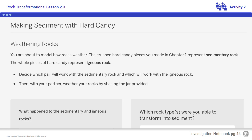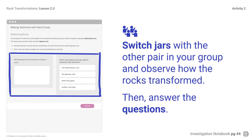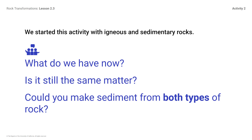After 1–2 minutes, stop shaking the rocks. Switch jars with the other pair in your group and observe how the rocks transformed. Then answer the questions. We started this activity with igneous and sedimentary rocks. What do we have now? Both igneous and sedimentary rocks ended up making small pieces of rock sediment.